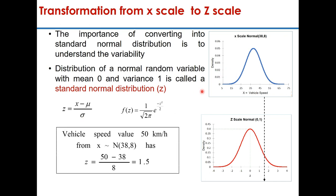For example, if you have a normal distribution with mean 38 and standard deviation 8, and a speed value of 50 km/h, then this 50 km/h can be converted into a standard score: z = (50 − 38) / 8 = 1.5. So 1.5 becomes the standard score. On the z-scale, a standard normal distribution is represented by N(0, 1), so 50 km/h becomes 1.5 on this distribution.